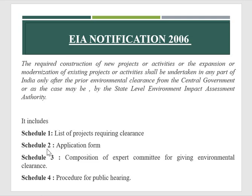The second schedule is the application form — the industry should submit an application form for environmental clearance to the Union Ministry of Environment and Forests. The third is Schedule 3, which is the composition of the expert committee for giving environmental clearance. It includes experts from various disciplines including air pollution, risk analysis, social service, NGOs, economics, water pollution, etc., constituting this committee.